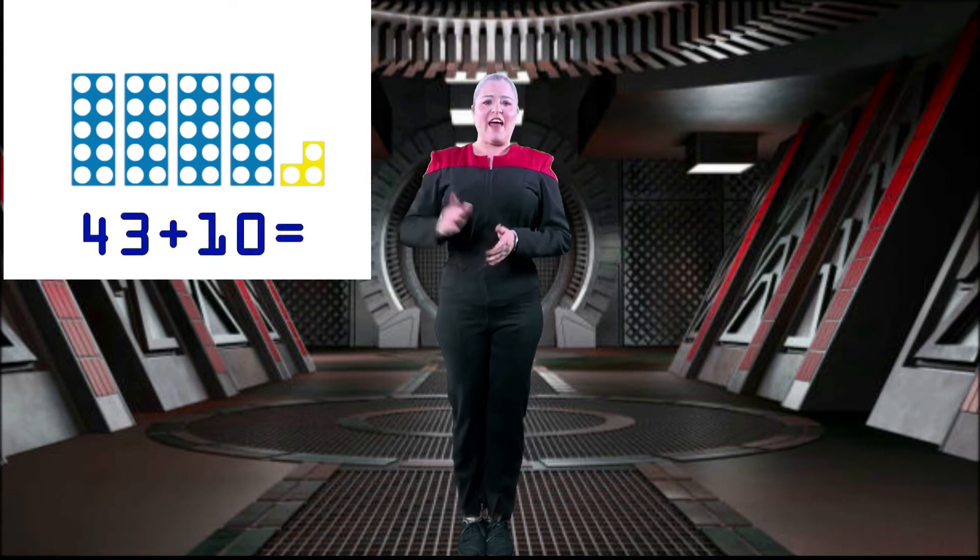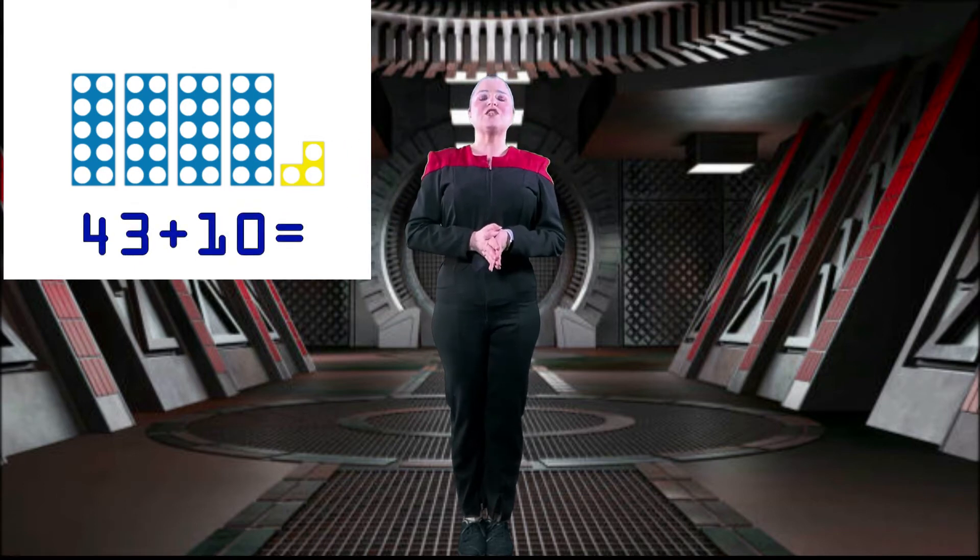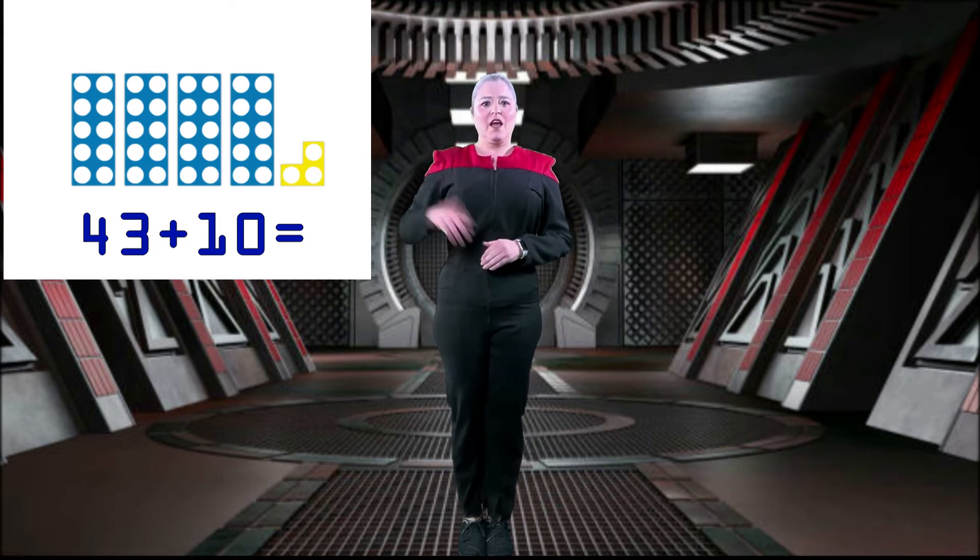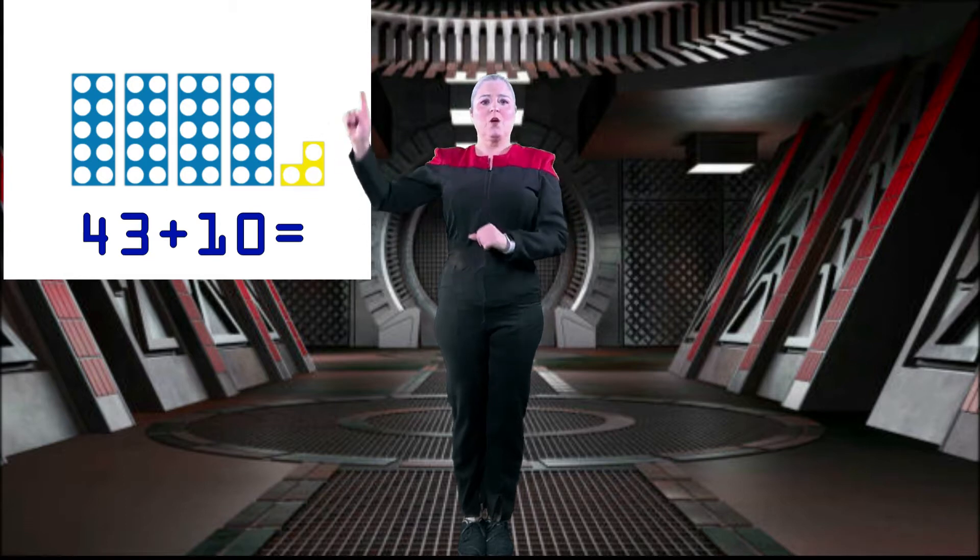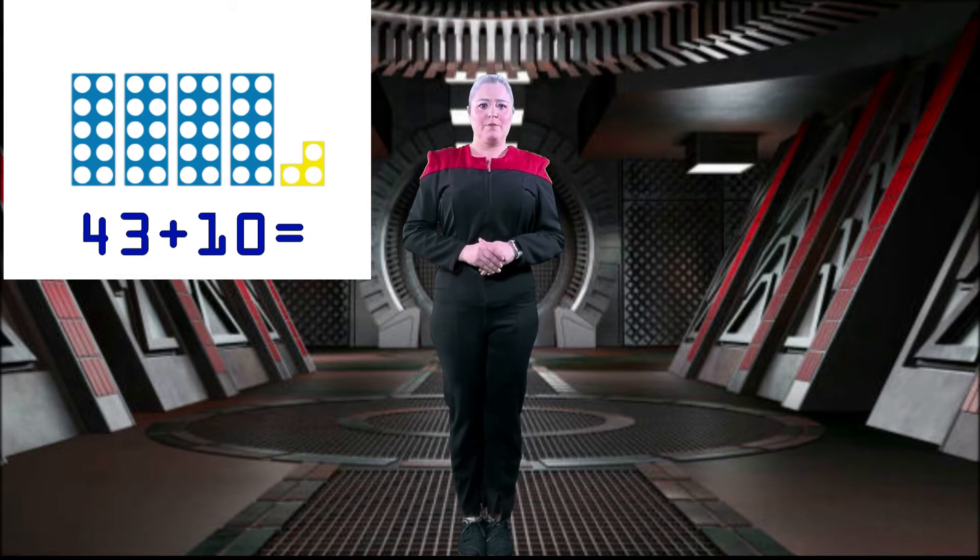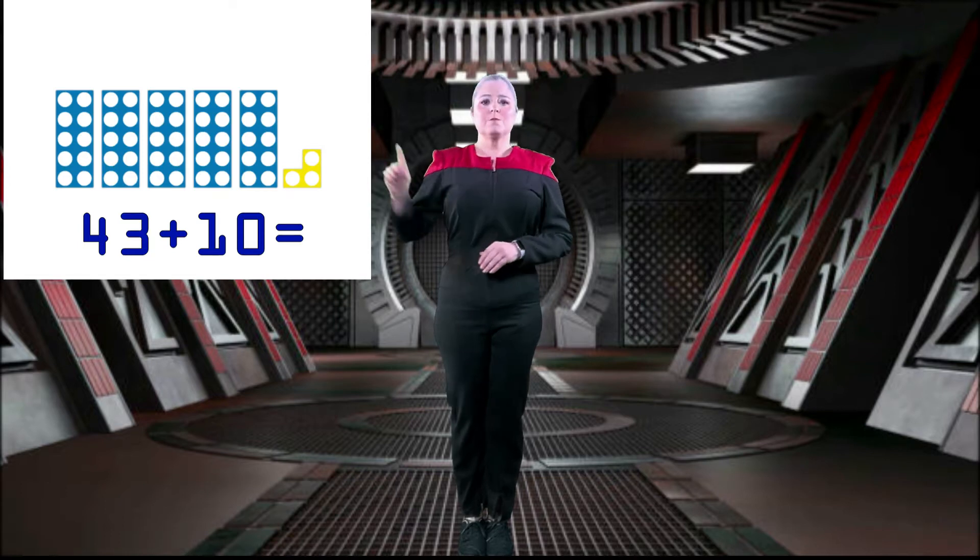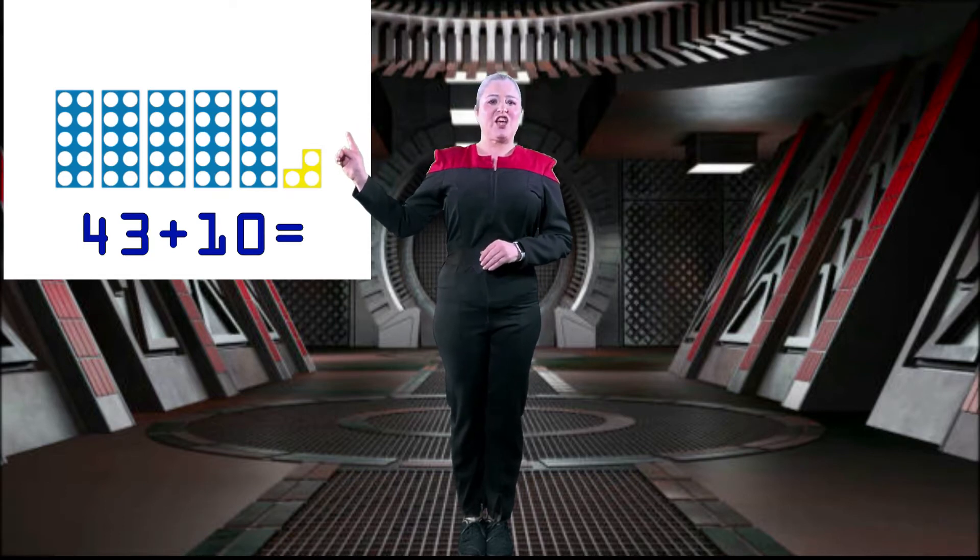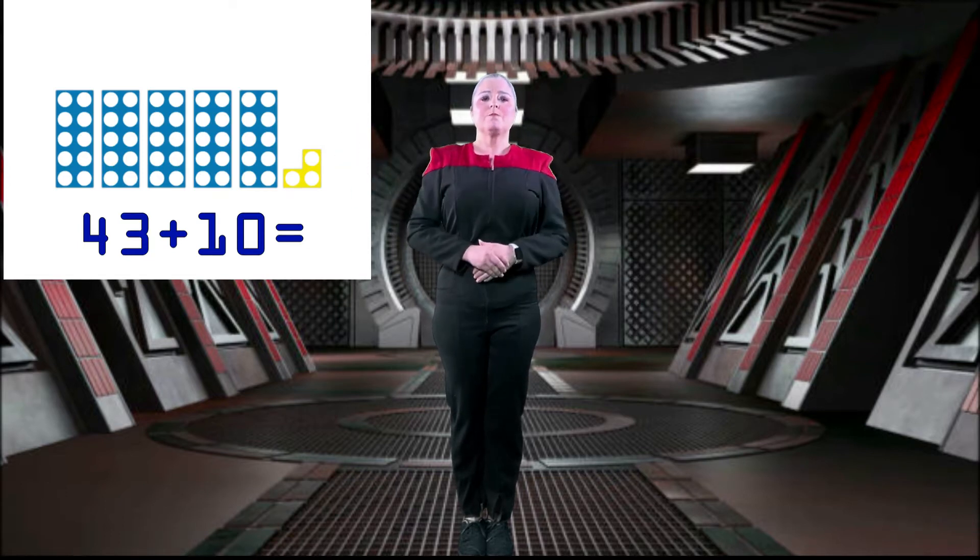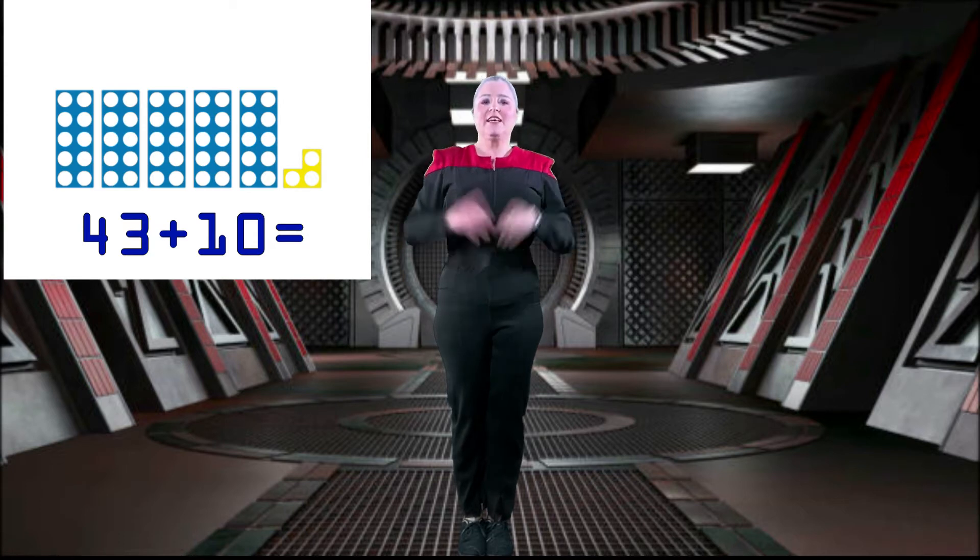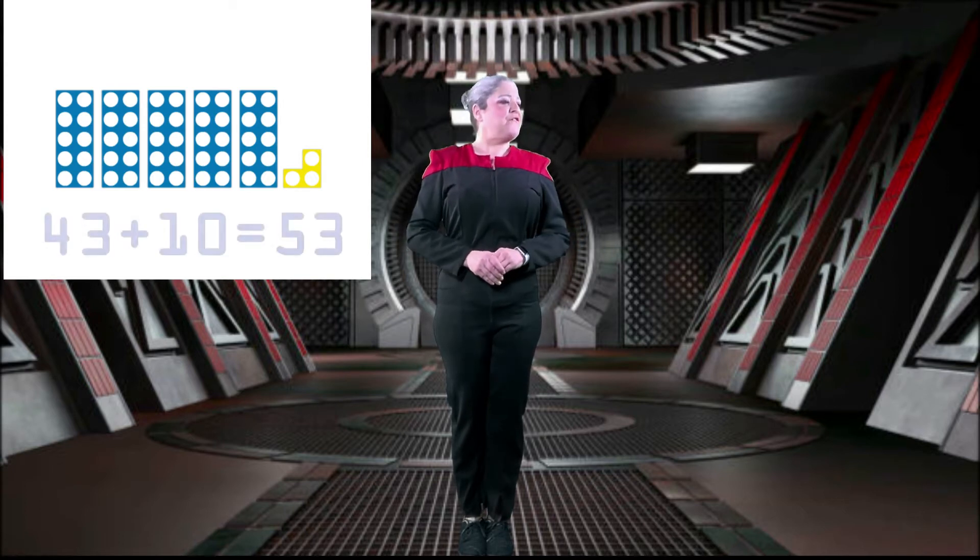Now, look at this sum: 43 plus 10. What is the easiest way to work out the answer to this? Good. We add another 10 shape. So, there is another 10 shape. What is the answer to 43 plus 10? Correct. The answer to 43 plus 10 is 53.